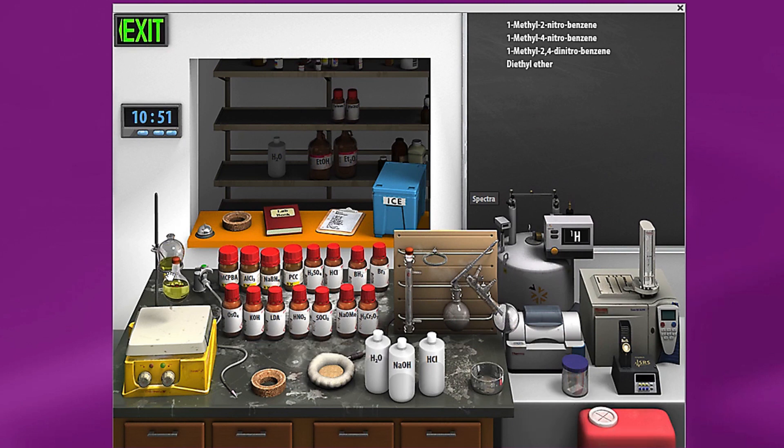Then you'll have the organic layer remaining. You can click on the organic layer to create a flask and drag it right here to your cork ring. And then drag your separatory funnel back to its spot.